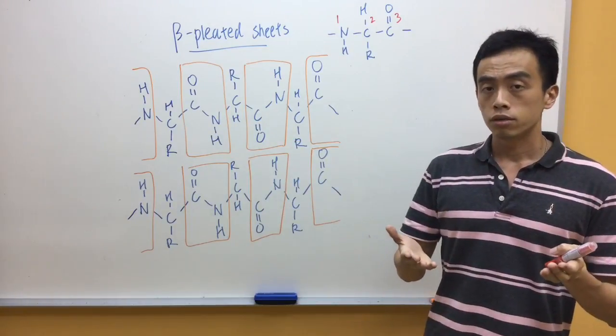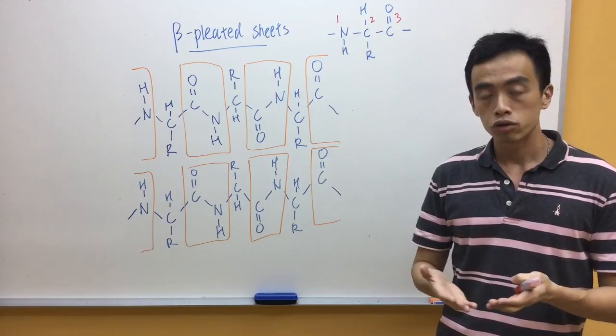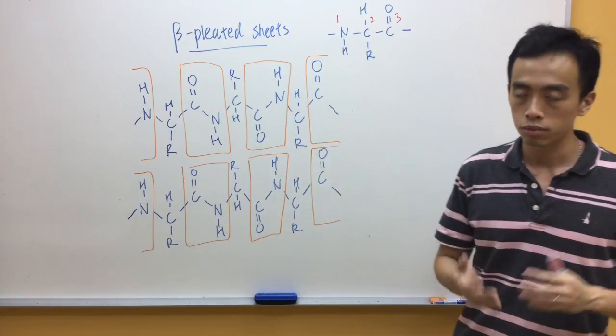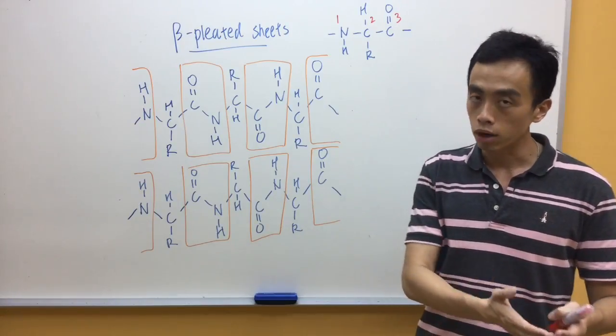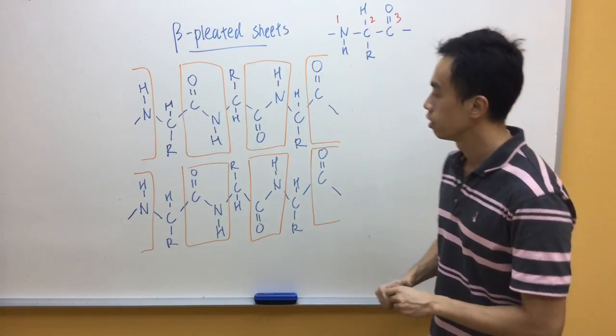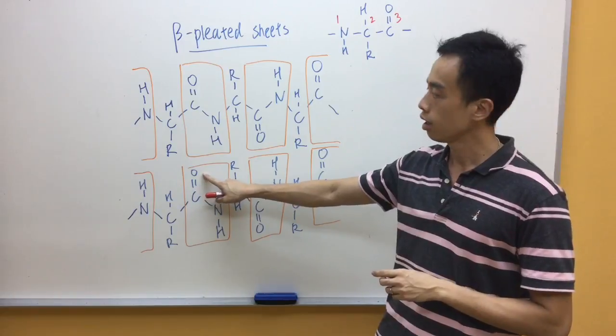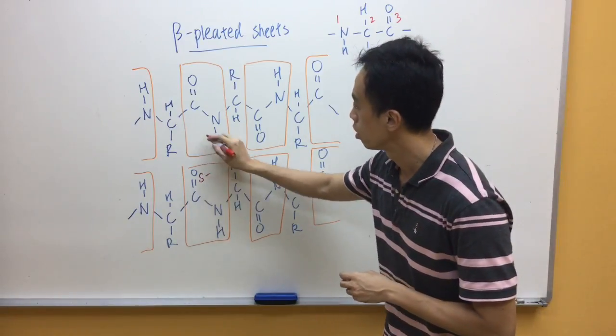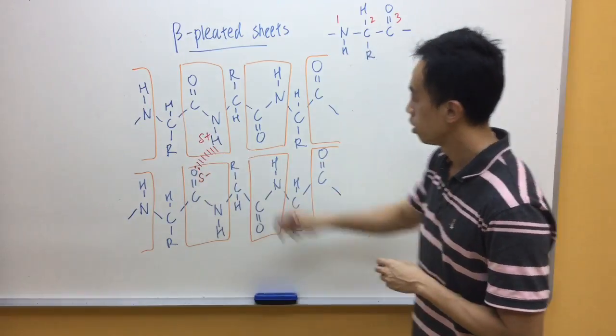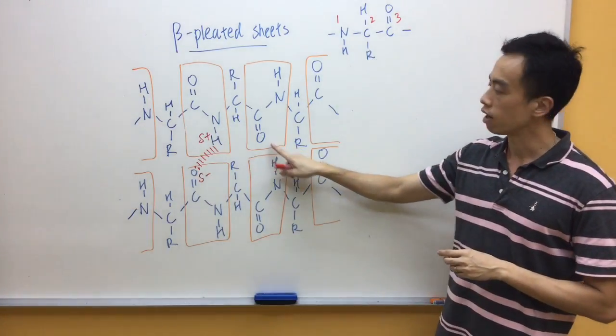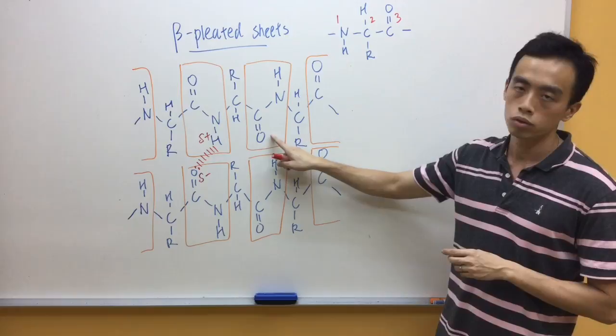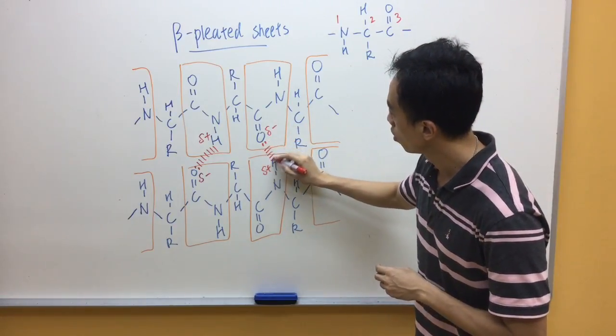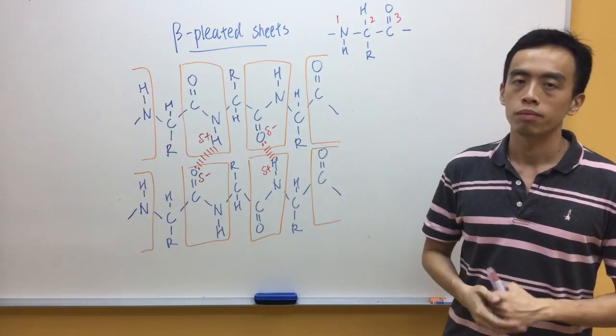Now, since the secondary structure is held together by hydrogen bonds between peptide linkages, now that I have boxed out my peptide bonds, I just basically need to find the hydrogen bond between one box and another box. So, I have oxygen here, and I have hydrogen here, so between them will be my hydrogen bond. I have oxygen here, I have hydrogen here, so between these two will be another hydrogen bond. So basically, this is how we draw our beta-pleated sheets.